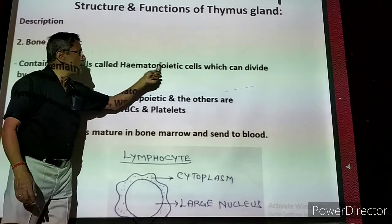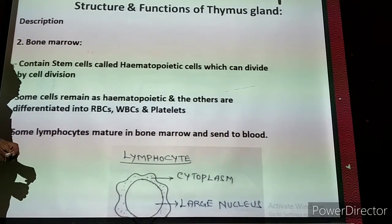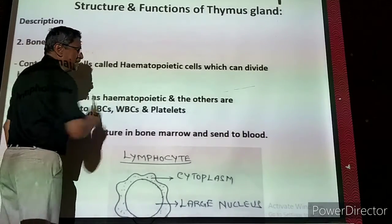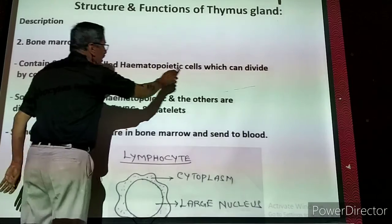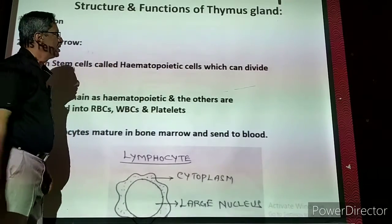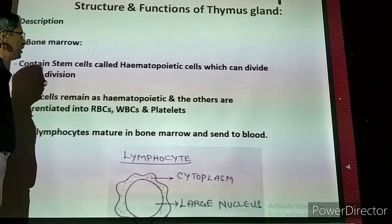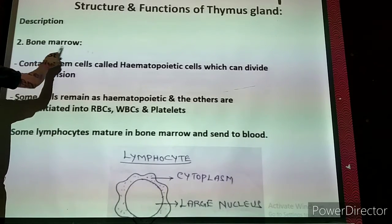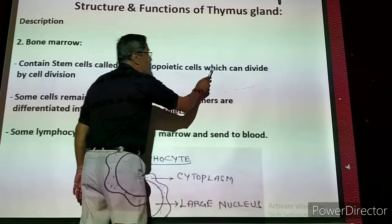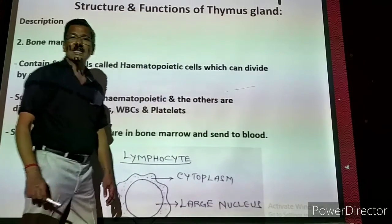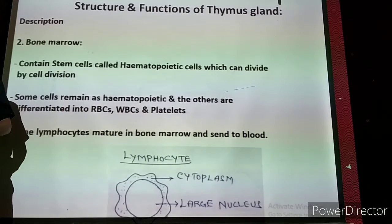Stem cells are also called hematopoietic cells. 'Hemato' means blood cells — RBC, WBC, and platelet — and 'poietic' means production. So the production of blood cells is called hematopoietic. The bone marrow contains stem cells called hematopoietic cells, which can divide, grow, and multiply in number by cell division.